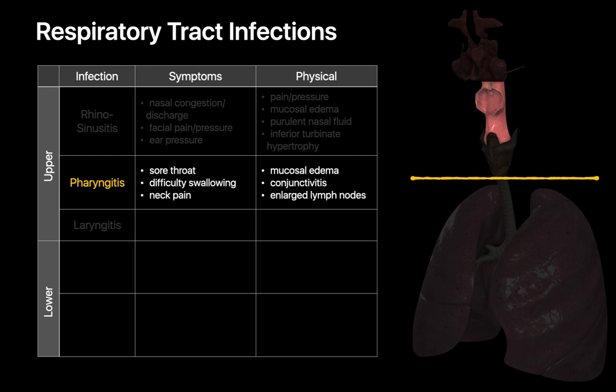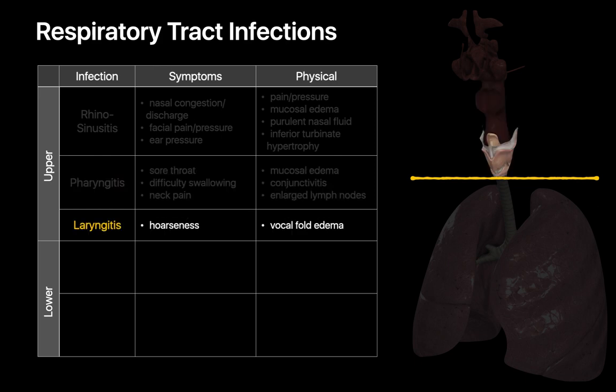The symptoms of pharyngitis are usually sore throat, difficulty swallowing, and neck pain. On physical exam, mucosal edema, conjunctivitis, and enlarged cervical lymph nodes may be present in a patient with pharyngitis. The typical symptom of laryngitis is hoarseness, and a clinician with a flexible fiber optic bronchoscope in the office might be able to see vocal fold edema in someone with laryngitis.